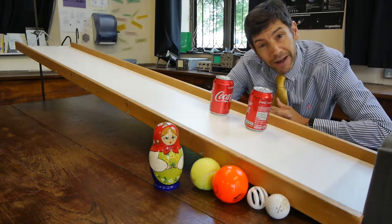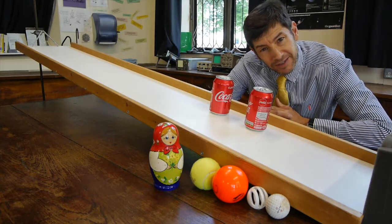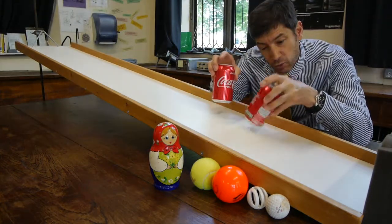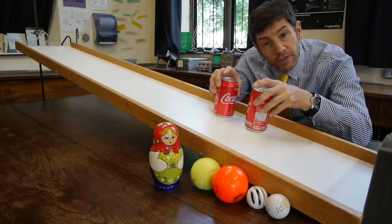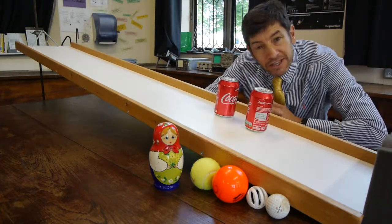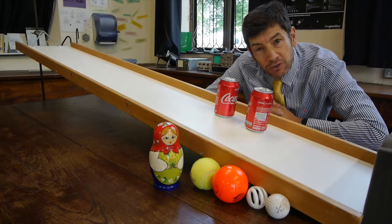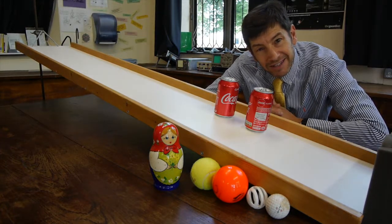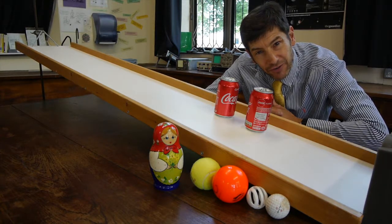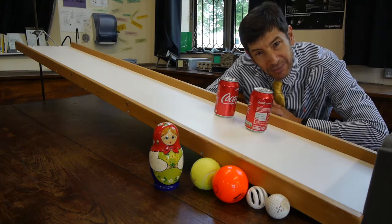You might remember a while back I did a video on falling objects, and we looked at two Coke cans—one that was full and one that was empty—and we did an experiment to see whether we could decide which one was full just by dropping them and seeing which one hit the ground first. So let's have a quick look at that experiment.